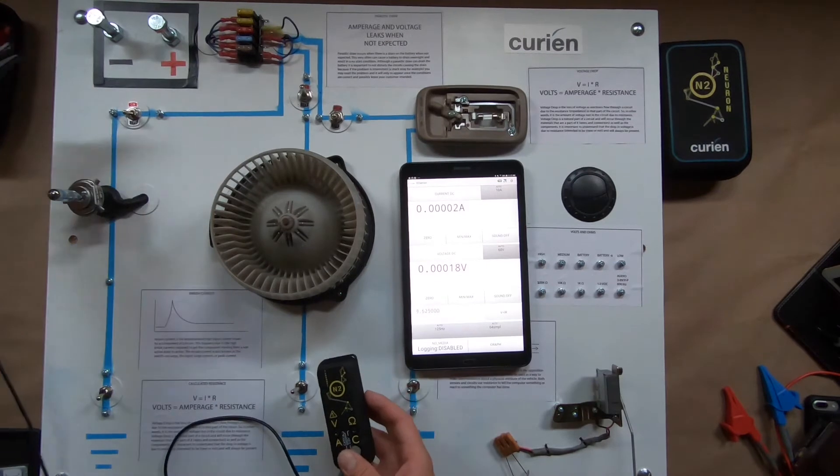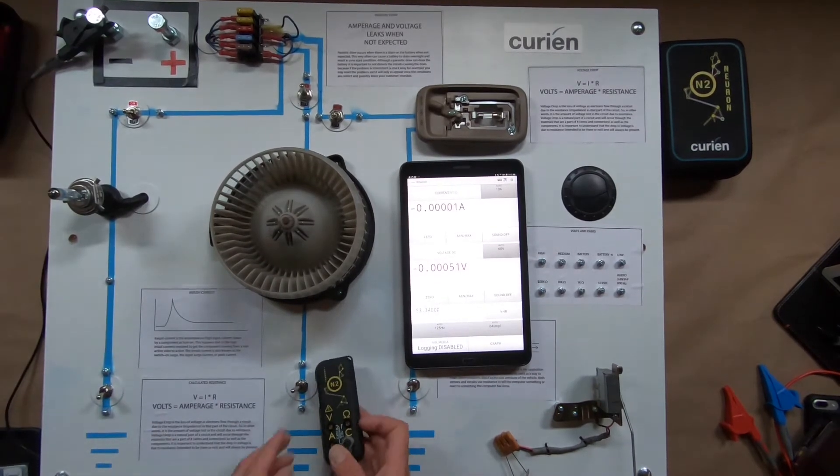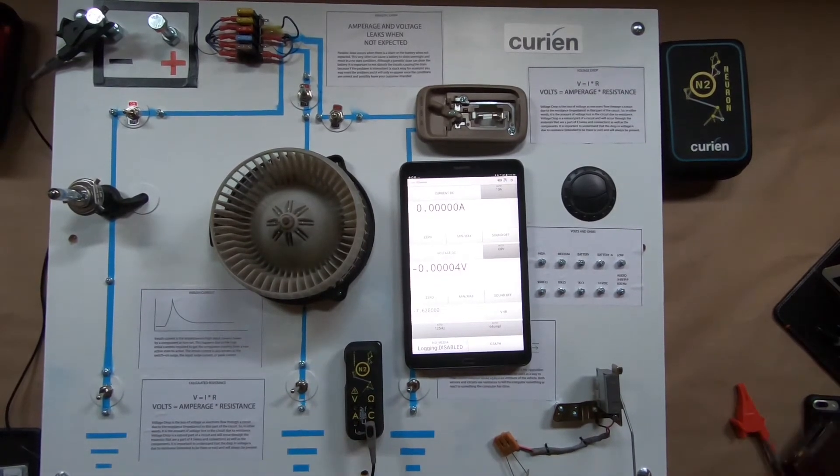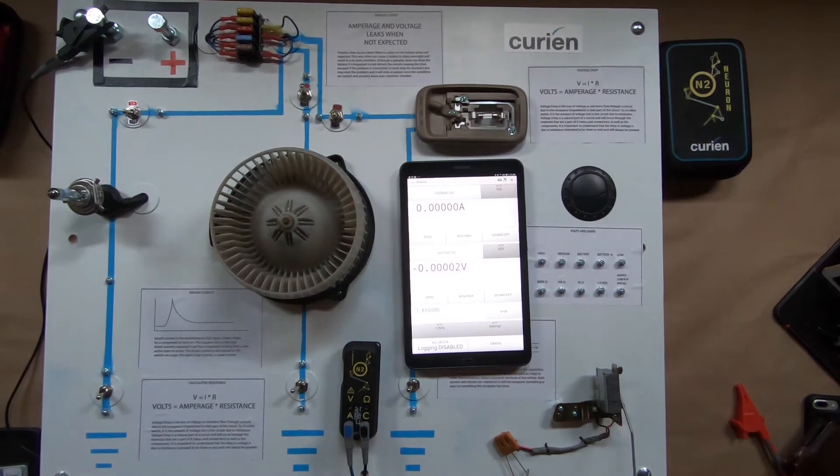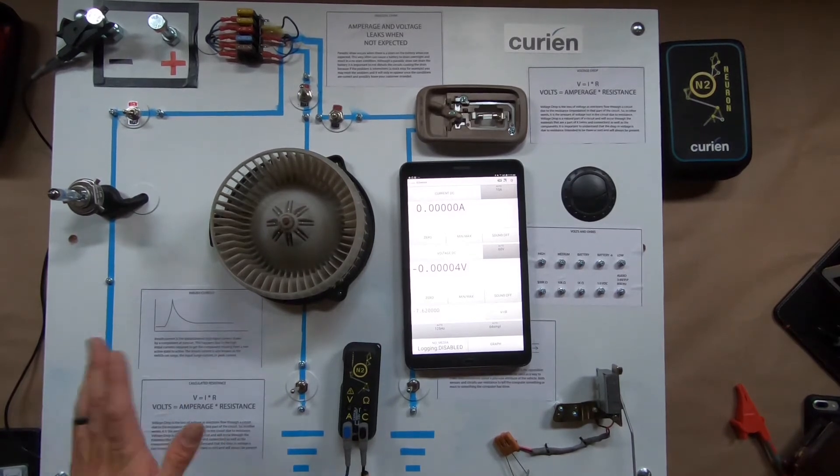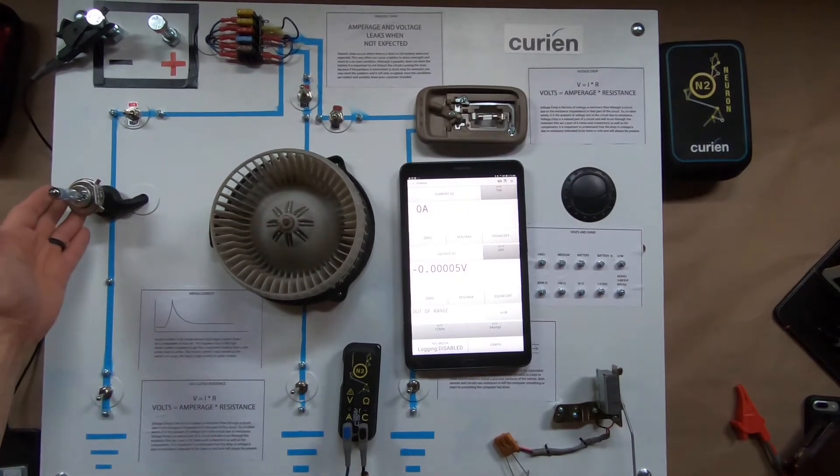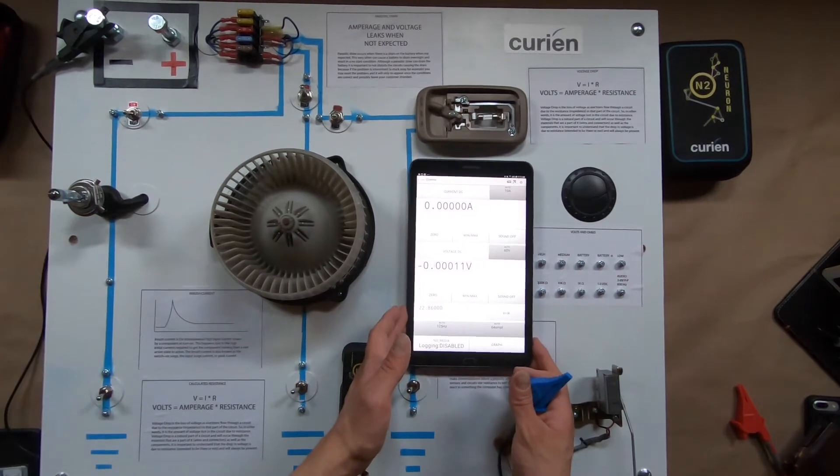Connect common here, come around and connect it to the battery post. Then we're going to take our amps here, plug it in. Now we're using our blue cable because, well, we just want to. But we're going to measure the amperage coming through this light bulb. This is a standard H4 bulb.